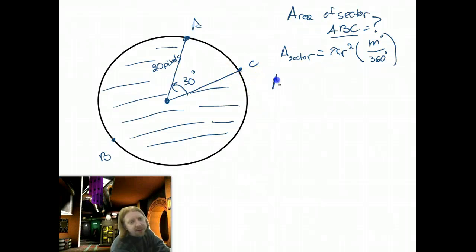So first though, let's get the area of the whole circle. So let's take this in two steps. The area of the whole circle, pi r squared. So that's going to be pi times 20 pixels.